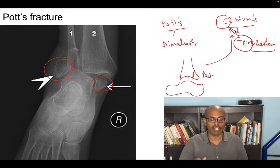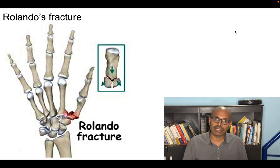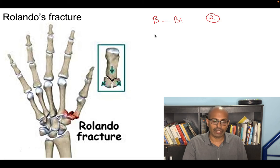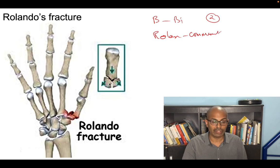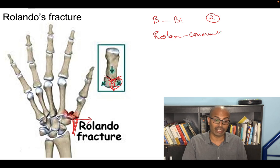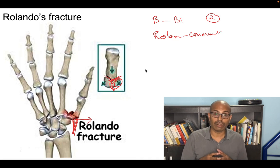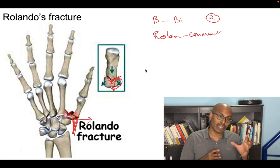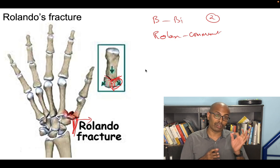To recap Bennett's vs Rolando's fracture: Bennett's fracture is a simple two-part (bi) intra-articular fracture of the first metacarpal base with subluxation caused by the APL pulling the metacarpal laterally. Rolando's fracture is a comminuted Y-shaped fracture of the same location; the APL cannot sublux the metacarpal because the fragment is separated, so there is no subluxation in Rolando's fracture.